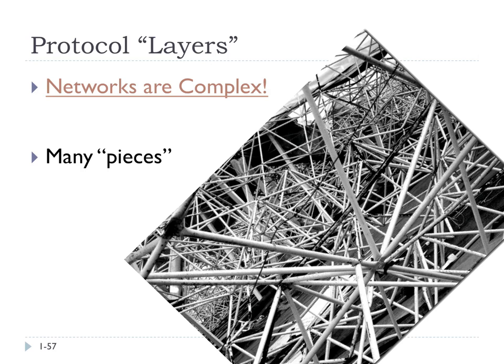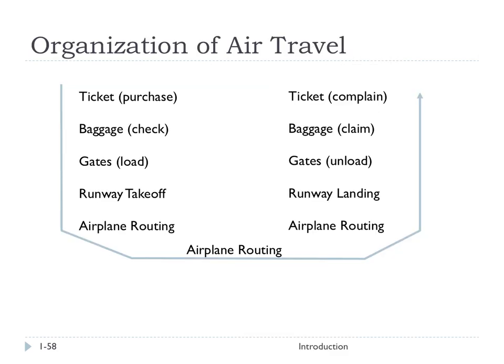How can we organize them so that we can understand them, work on them, fix them, extend them, and make them better? The authors have a really nice analogy between the organization of air travel and network architecture. If you just slice off the top of air travel, you have the idea of purchasing a ticket, giving them the ticket, and arriving at your destination. You don't have to understand how the lower levels work to get from point A to point B.